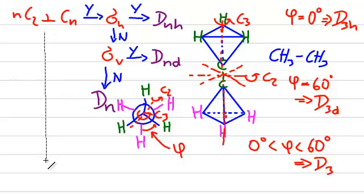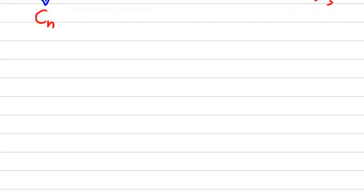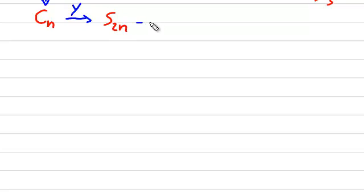What happens if we do not have N C2 axes which are perpendicular to the CN principal axes? In that case, we have to ask whether we have a CN axis at all. If you do have a CN axis, we check for a rotary reflection symmetry operation S2N. If this is available, then our point group is called in the same way, namely S2N.